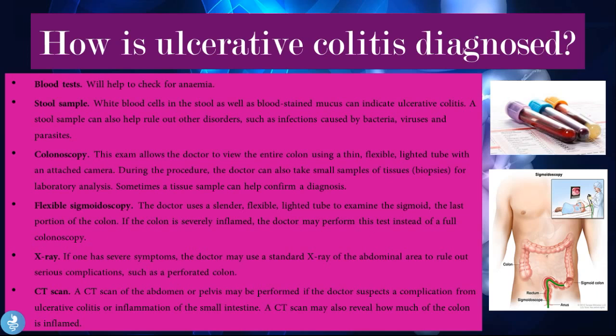How is ulcerative colitis diagnosed? Blood tests help check for anemia — because patients suffer from chronic inflammation and ulceration, those ulcers and inflamed areas tend to bleed, leading to anemia detectable on blood tests. A stool sample: white blood cells and blood-stained mucus can indicate ulcerative colitis, and it can also help rule out other disorders such as infections caused by bacteria, viruses, and parasites. A colonoscopy allows the doctor to view the entire colon using a thin flexible lighted tube with a camera, and biopsies can be taken for laboratory analysis to help confirm the diagnosis.